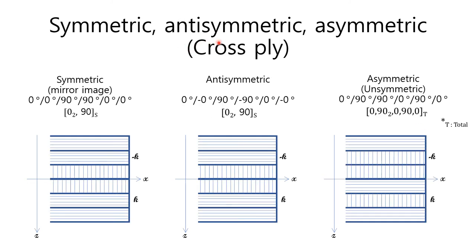Let's look into what symmetric, antisymmetric, and asymmetric laminates are in the case of cross-ply. When it comes to cross-ply, symmetric laminate is the same as antisymmetric. In this example, the laminate code name is symmetry of 0090. Asymmetric laminate has no rule for stacking sequence for layers. In this example, the laminate code is: 0, double 90, 0, 90, 0.